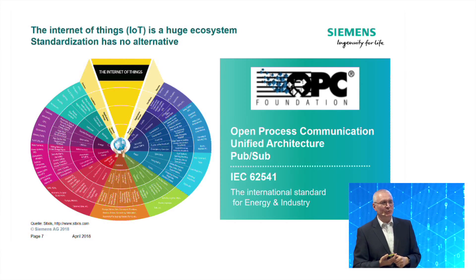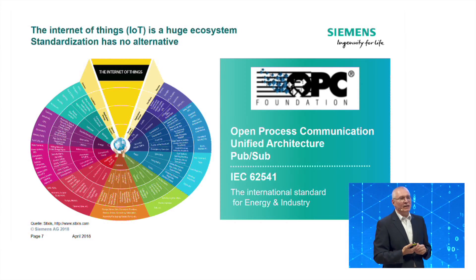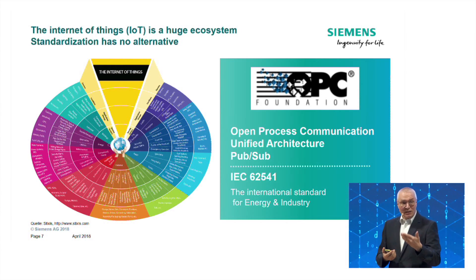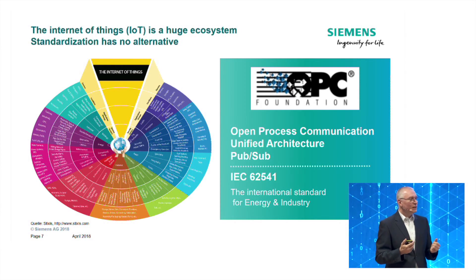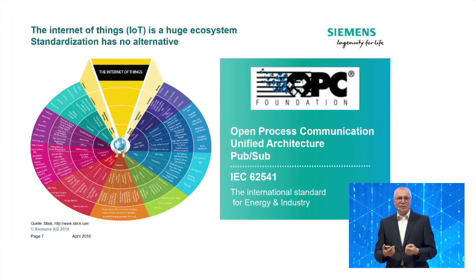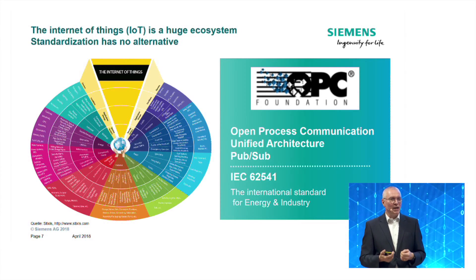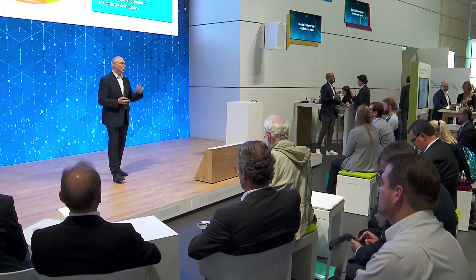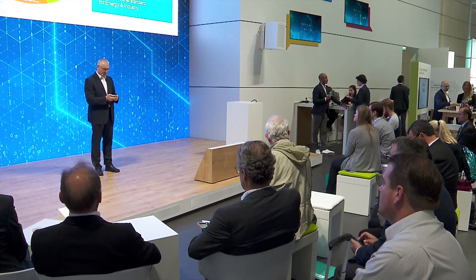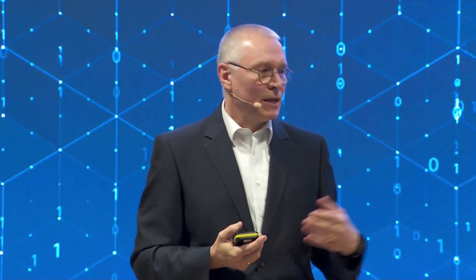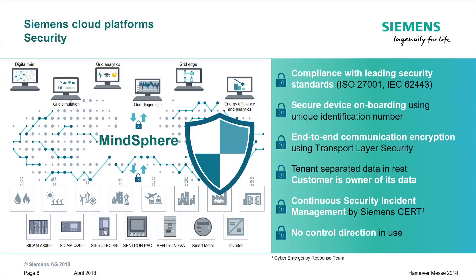Our statement on this point is that there is the OPC — Open Process Communication — Foundation, which is really pushing for standardization. The latest development, still not finally signed, is the so-called Unified Architecture, and the procedure to connect devices is Publish and Subscribe. It's not only a community effort; it's a real international standard — IEC 62541. One of the highest goals of our utilities and industry is to have no vendor lock-in. With this standardized communication we assure openness to connect to any cloud and to connect any device to our cloud.